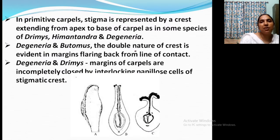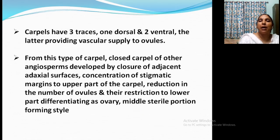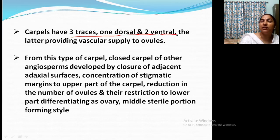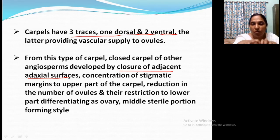A carpel has three traces — one dorsal and two ventral — which is the vascular supply. This is clear evidence that the carpel is foliar in origin. From this type of carpel, a closed carpel developed by closure of adjacent adaxial surfaces. The stigmatic margin remains in the upper part of the carpel. Then there is a reduction in number of ovules and restriction of ovules to the lower part. In the primitive case, ovules are dispersed along the whole structure, but in the advanced type, ovules are restricted to the basal part only — that is the ovary.